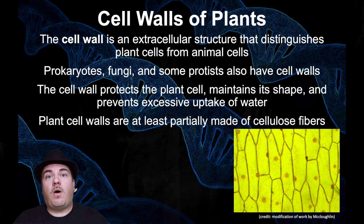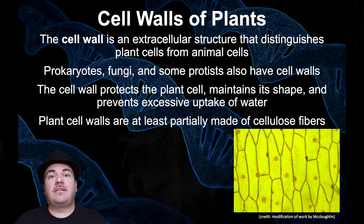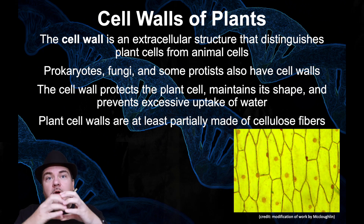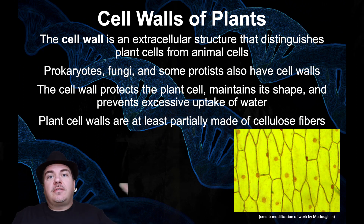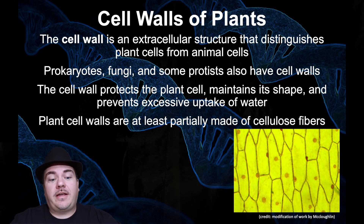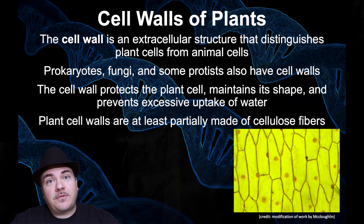What does a cell wall do? It's a wall — it protects the plant cell and helps it to maintain its shape. It helps a plant cell not explode from taking in too much water. The large central vacuole swells up with water, but the cell wall holds it together, preventing it from being burst open from the turgor pressure — the water pressure you find inside plant cells. Plant cell walls are made out of cellulose fibers and some other components.